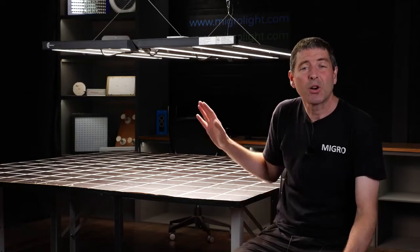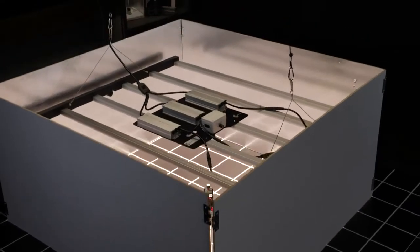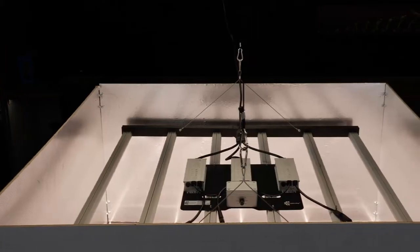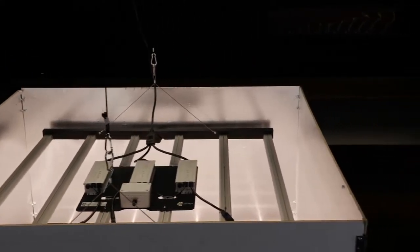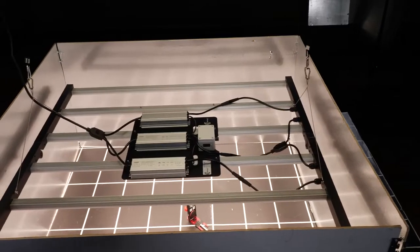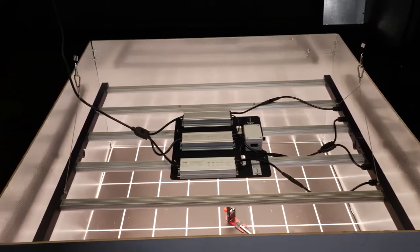This is the higher performance fixture of the range, marked as 2.7 micromoles per joule. That of course is its total light output in photon terms divided by its wattage and I as always have put it into the system test.